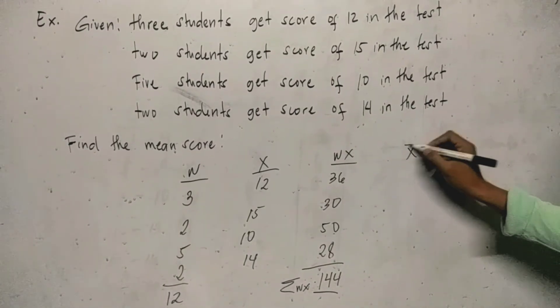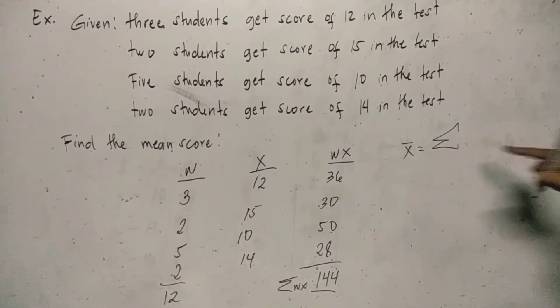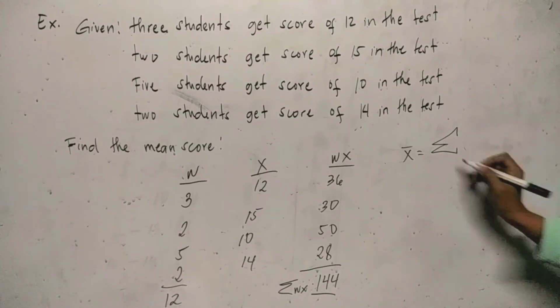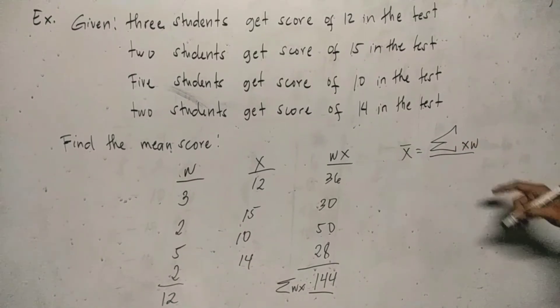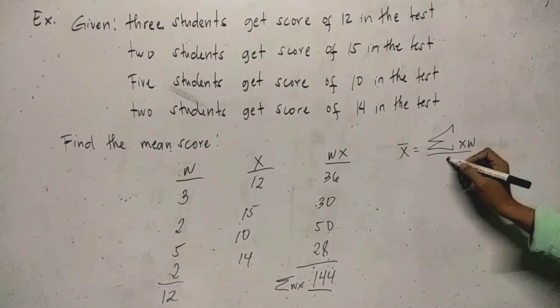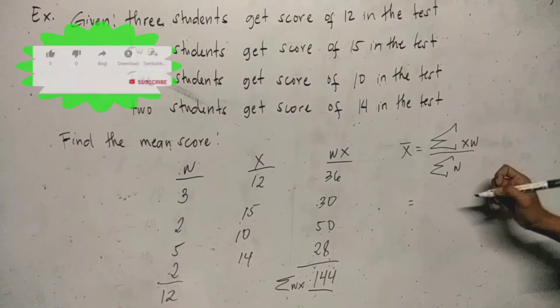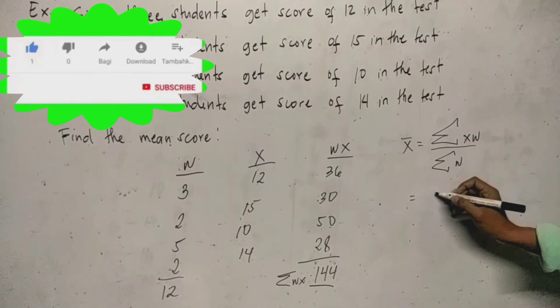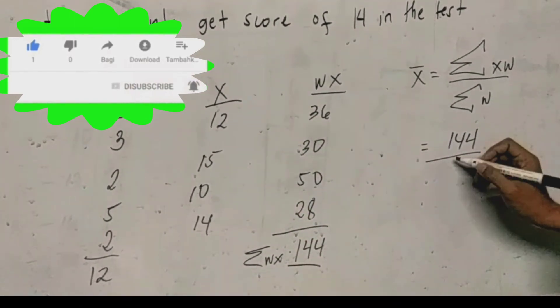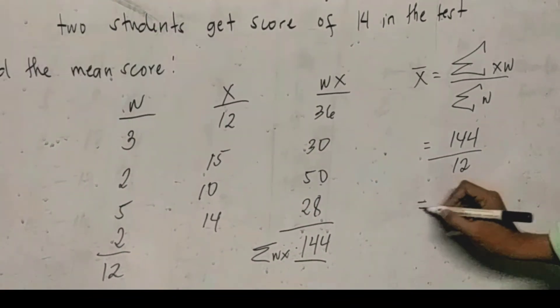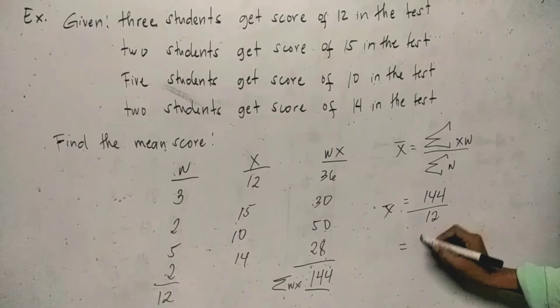Substitute in the formula. X bar or mean is equal to summation of xw, the product of x and w, all over the summation of w. We have 144 all over 12. Then 144 divided by 12 is equal to 12.